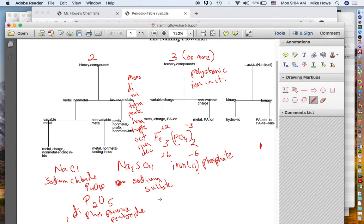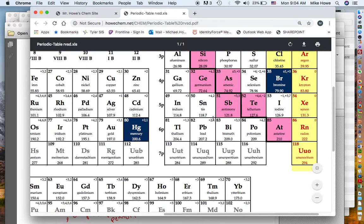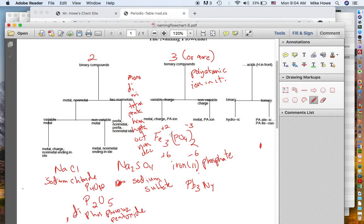Now we're going to take a look at just a few more examples. What if we had Pb3N4? Is this binary or ternary? So it's binary, so you're over here. It's a metal and a nonmetal because lead's a metal. Come down, is lead variable, so you go back and check. And lead is right here, so it is variable because it could be two or four.